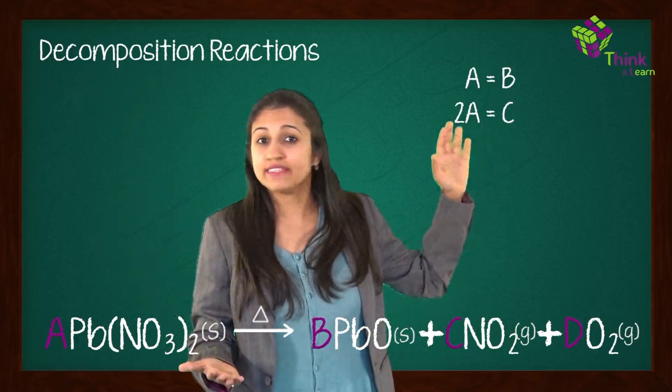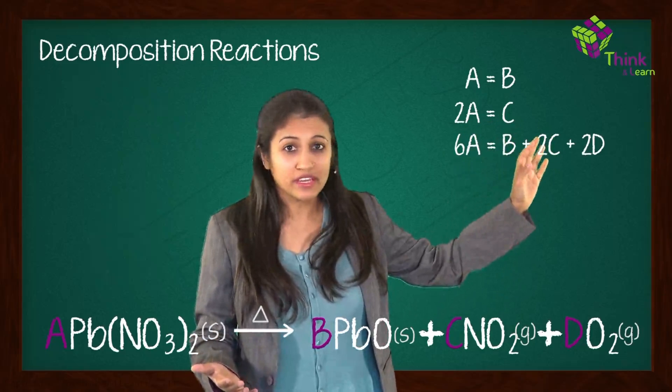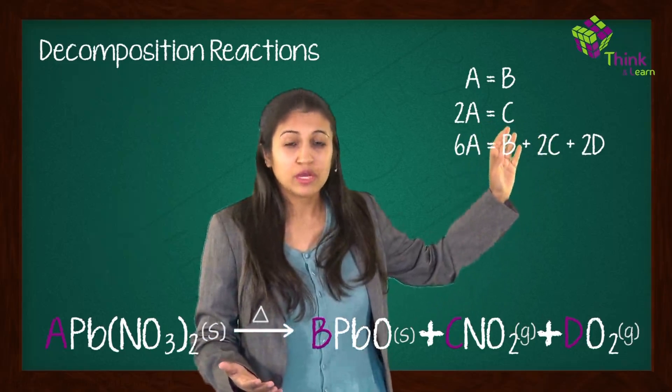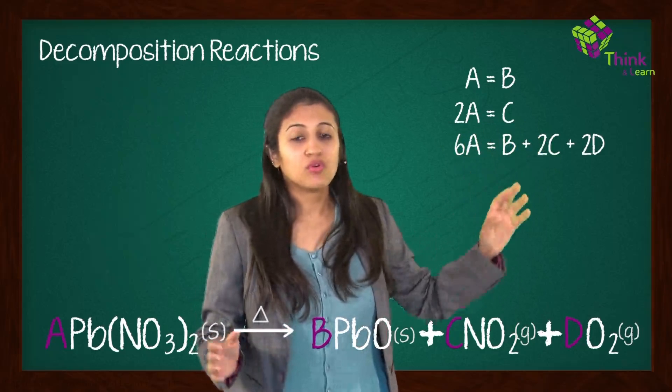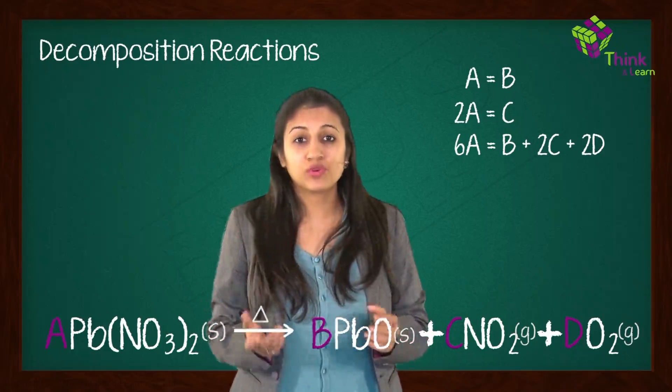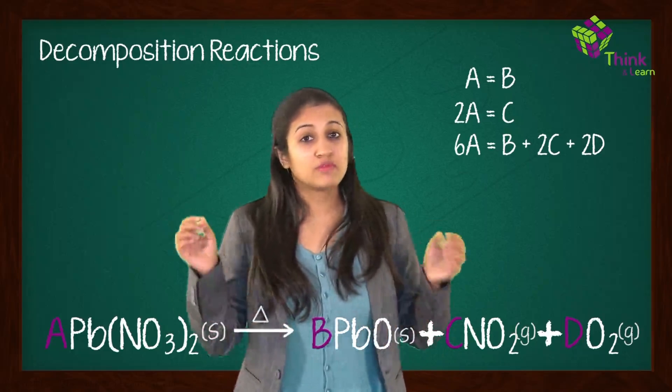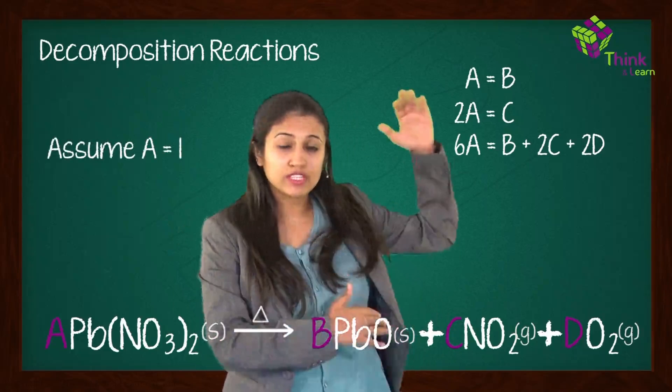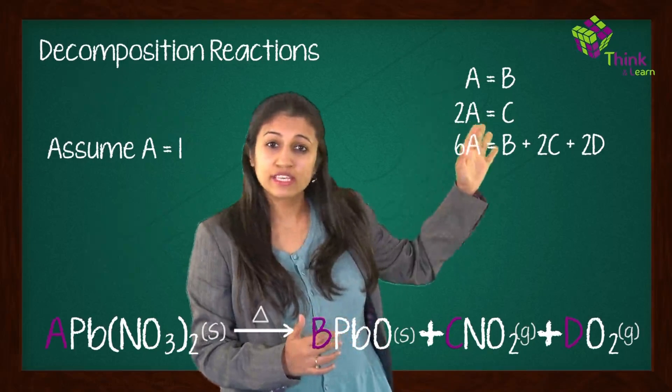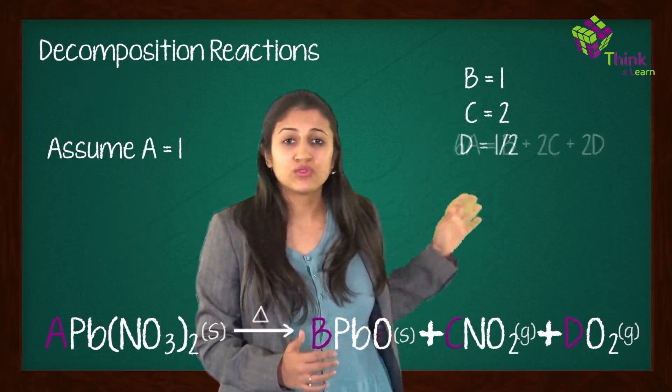If you consider oxygen, you get 6A is equal to B plus 2C plus 2D. Now what we're going to do is, if you remember what I taught you last time, make A equal to 1. Why? Because that's the largest compound. Lead nitrate is the largest compound. So make A is equal to 1. Then what do you get? When you substitute in these equations, you'll get A is equal to 1, B is equal to 1, C is equal to 2, and D is equal to half.